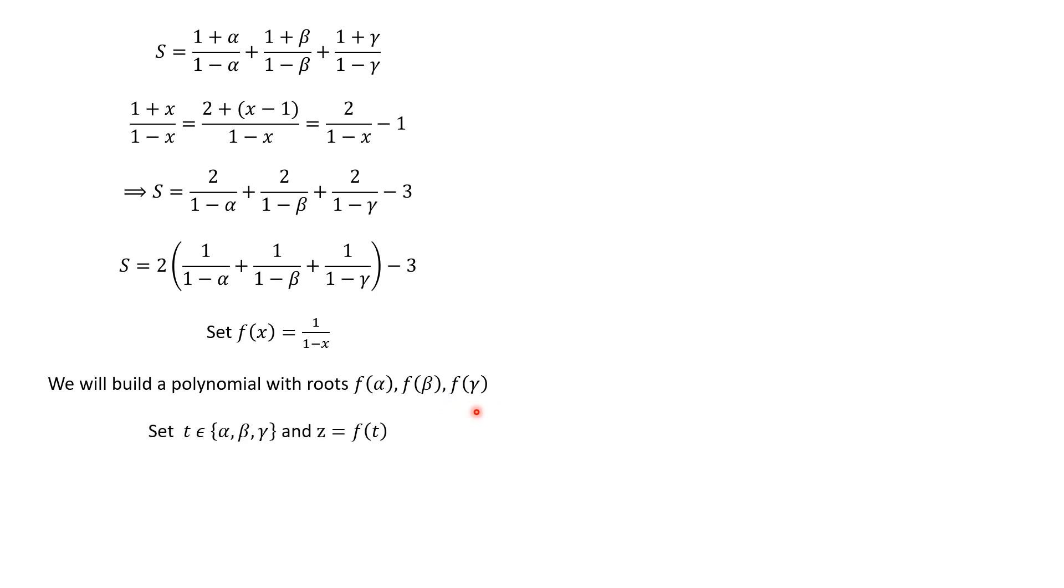Now, we pick T, a root of the original polynomial, which is x cubed minus x minus 1, as this. And we set Z equal F(t). Actually, Z is one of these numbers. So we can rewrite T as a function of Z, as follows. Now, since T is the root of this polynomial, we can rewrite this. We replace T by its expression in terms of Z, and we have that. So we develop this to have that outcome.